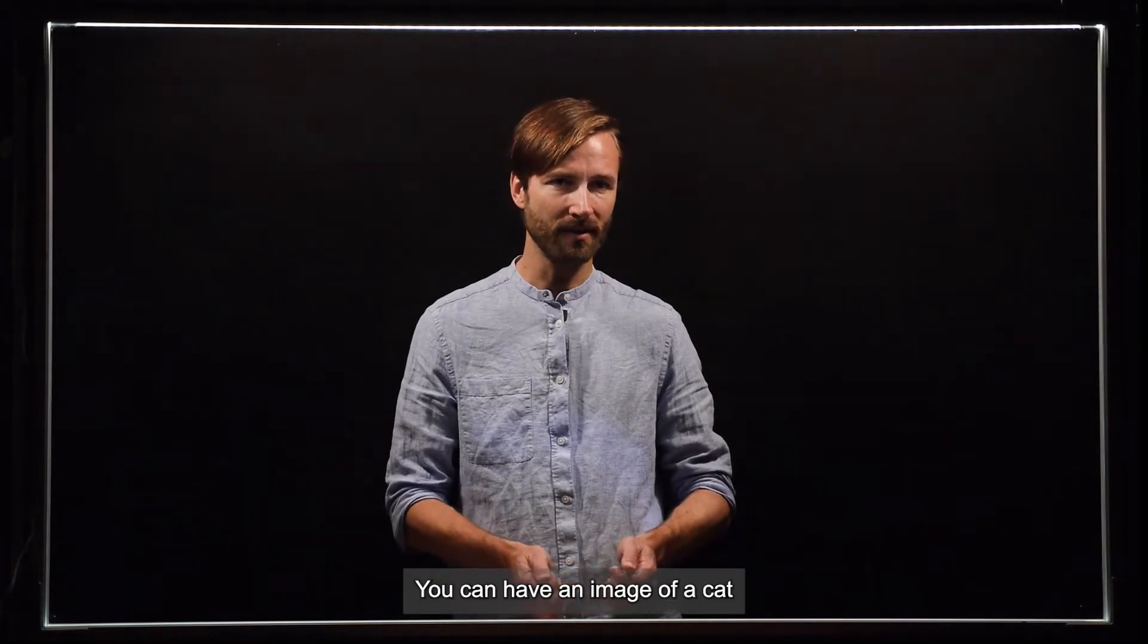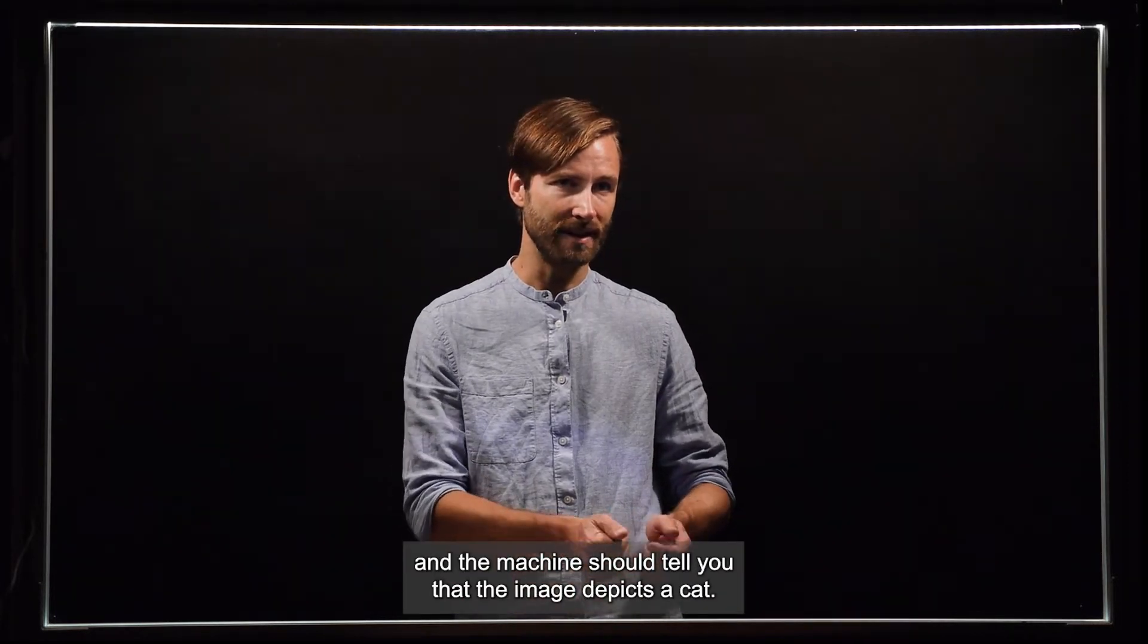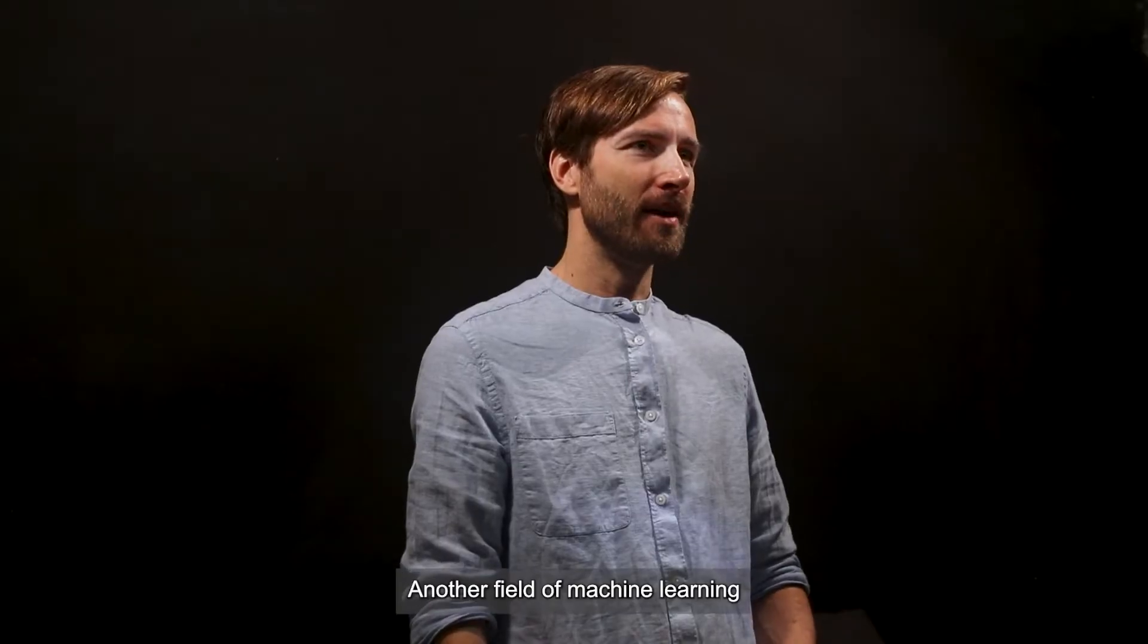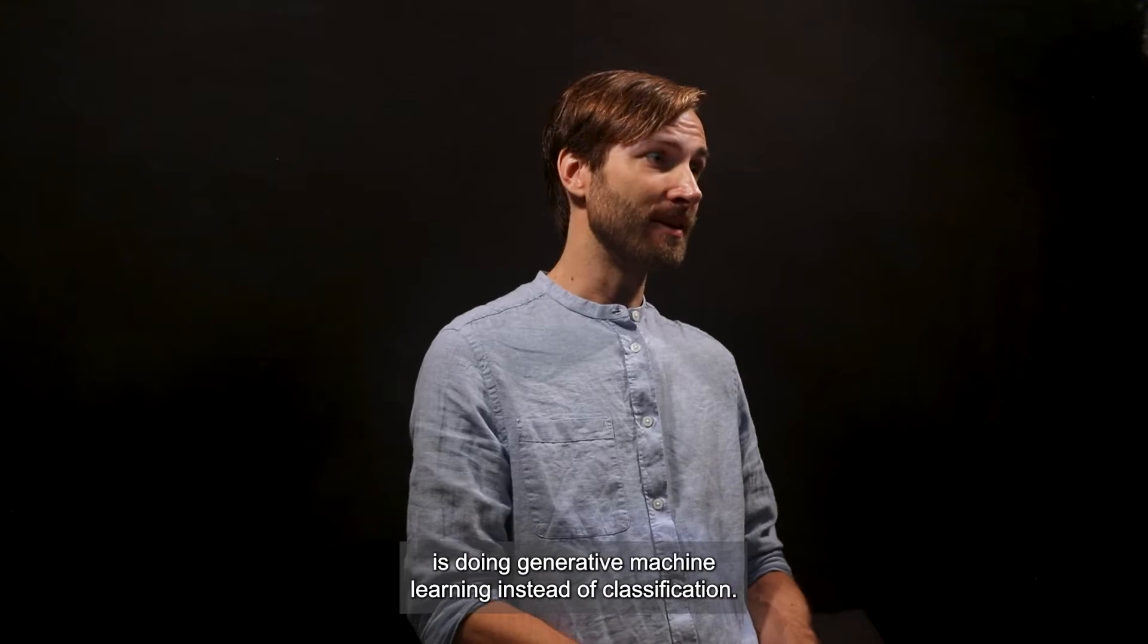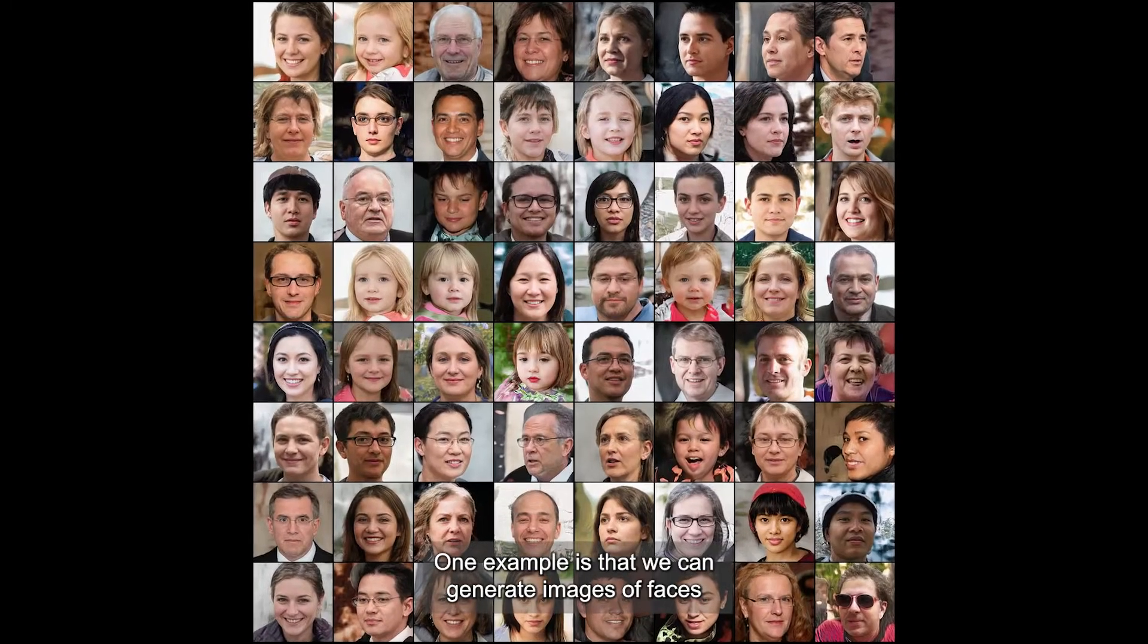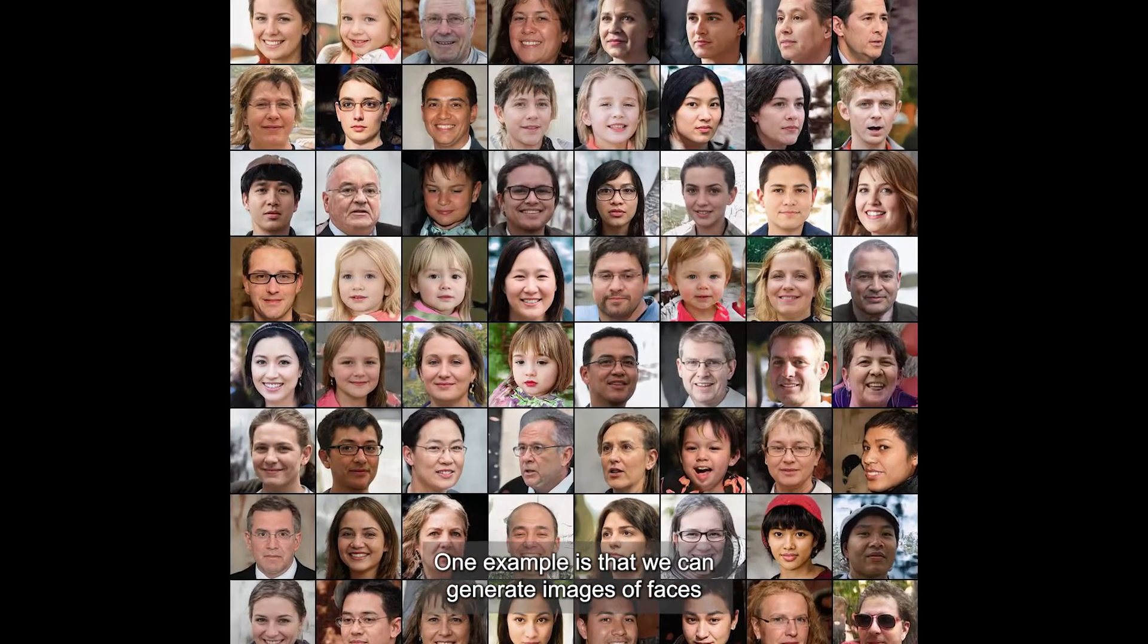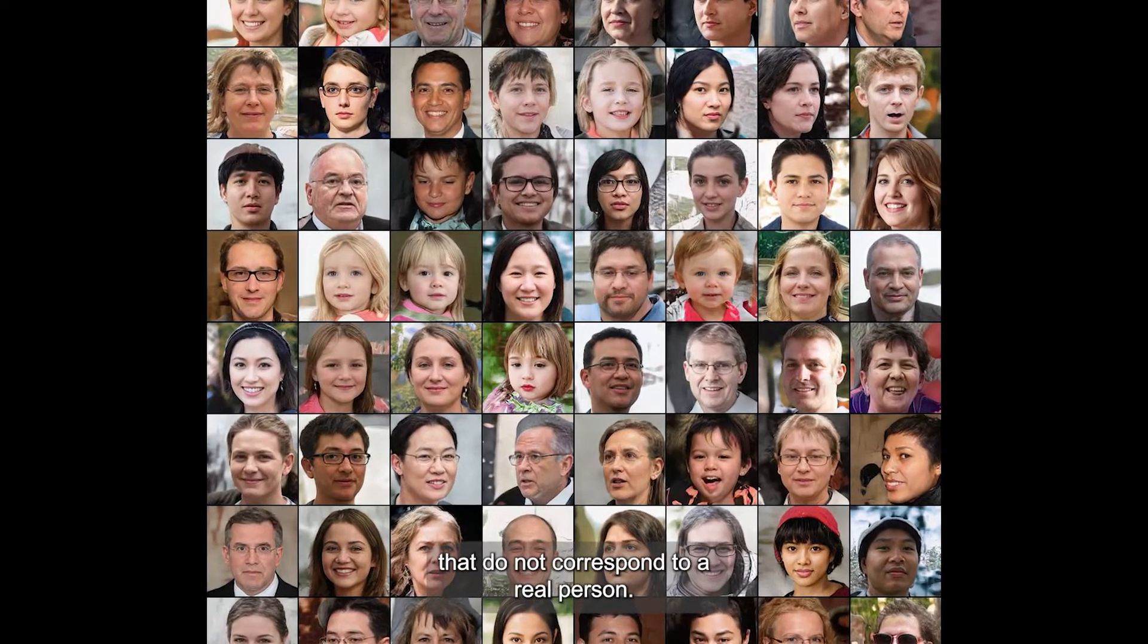So you can have an image of a cat and the machine should tell you that the image depicts a cat. Another field of machine learning is doing generative machine learning instead of classification. One example is that we can generate images of faces that do not correspond to a real person.